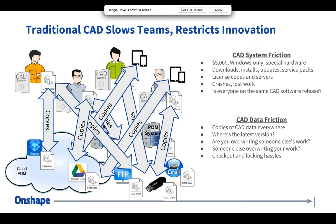The idea behind Onshape is to change from a file-based infrastructure — passing files back and forth, opening, closing, saving, and replacing references when data is exchanged — and move toward something more streamlined that takes away the manual management of all these files.